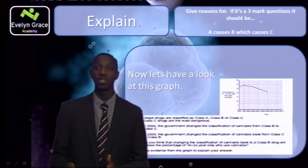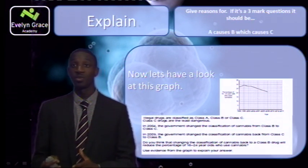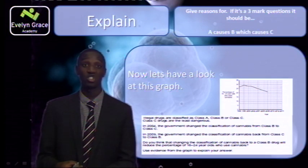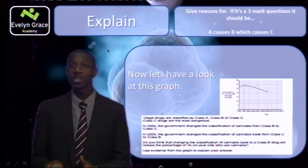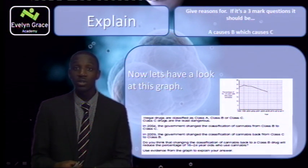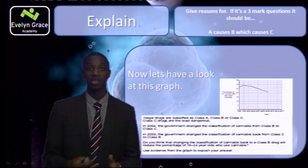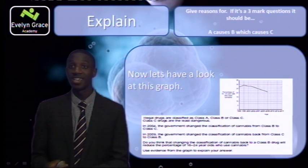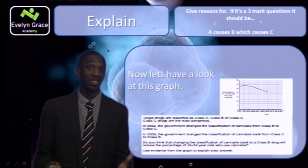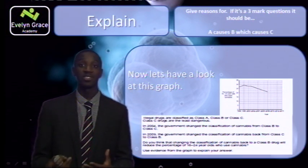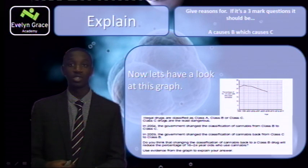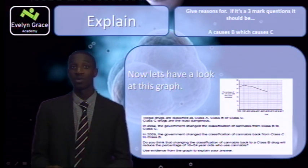From this graph, the first thing you may see is that the general trend — the percentage of 16 to 24 year olds taking cannabis — has decreased. So my first answer is no. The reason is that if you look at the graph, it was made a class B drug in 2009, and even then the general trend was already decreasing. And even before that, in 2004, when it was a class B drug, the evidence from the graph — right at the top — suggests that drug use was actually high. So would the class B classification reduce usage? I would say no, and I've quoted data from my graph.